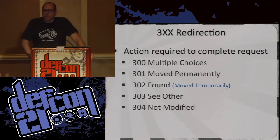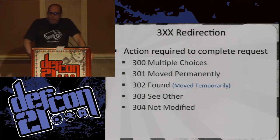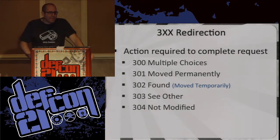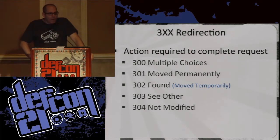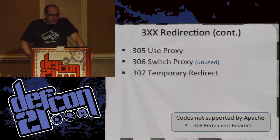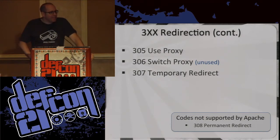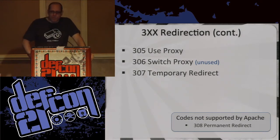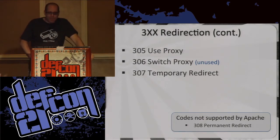You get the 300 redirection stuff. Most people know what a 301 and 302 are. 304 not modified is something you see quite a lot. You also get some weird stuff that isn't used anymore, like switch proxy. Use proxy is interesting — if you return a proxy setting in the location header, it says you should use this proxy for your communications. I'm sure no one would use that for malicious purposes in any way.